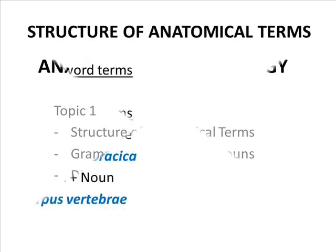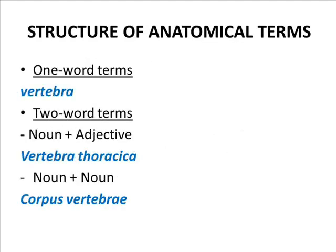The anatomical term is a word or several words used to denote a definite unit or structure of the human body. Latin anatomical terms may consist of one, two, three, four, or more words.